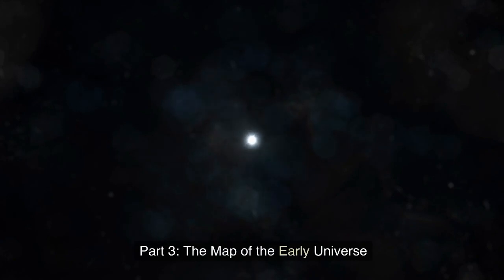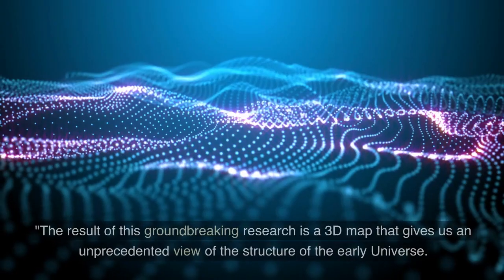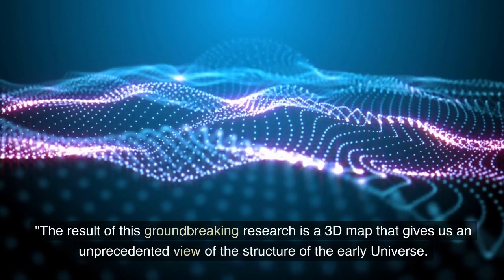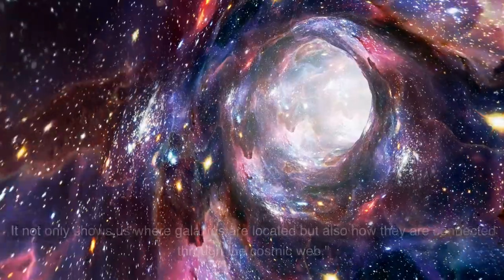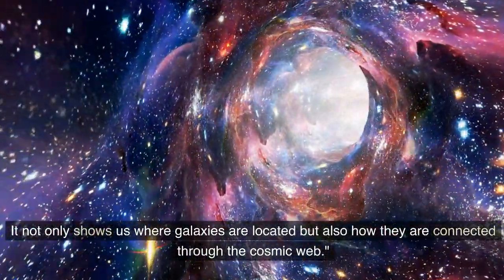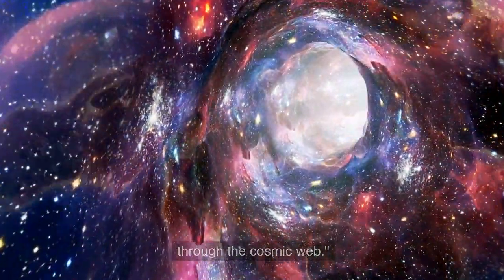Part 3, The Map of the Early Universe. The result of this groundbreaking research is a 3D map that gives us an unprecedented view of the structure of the early universe. It not only shows us where galaxies are located but also how they are connected through the cosmic web.